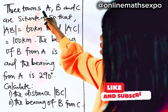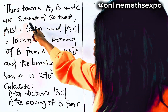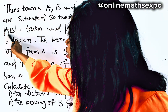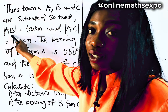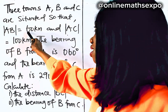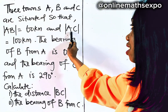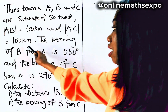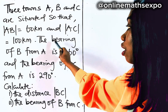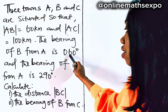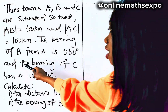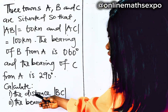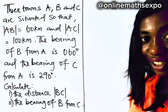We are told that three towns A, B, and C are situated so that AB — the distance between A and B — is 60 kilometers, and distance between A and C is 100 kilometers. The bearing of B from A is 60 degrees and the bearing of C from A is 290. This is what we are asked to calculate.